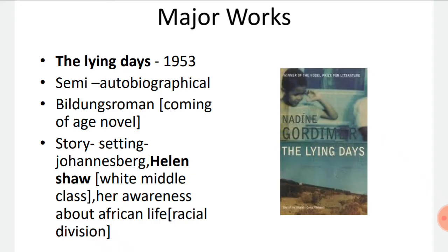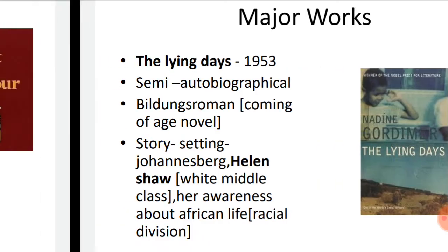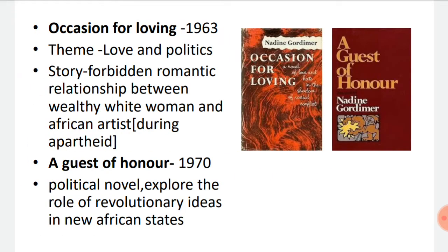The story of this novel is set in Johannesburg, South Africa. The protagonist is Helen Shaw, a white girl belonging to a middle-class family. The story deals with her growing awareness about African life and her concern about the racial division.